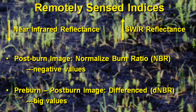We're going to use a remotely sensed index called the Normalized Burn Ratio (NBR), which capitalizes on the decreased near-infrared reflectance and the increased short-wave infrared reflectance. Burn pixels will have negative NBR values. If we take a pre-burn NBR minus a post-burn NBR, we get a Difference Normalized Burn Ratio (dNBR), and in that case burn pixels will have large positive values.